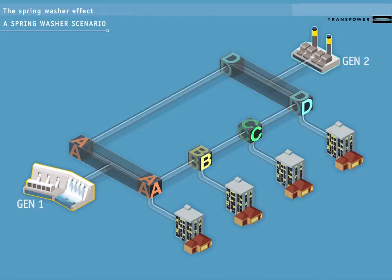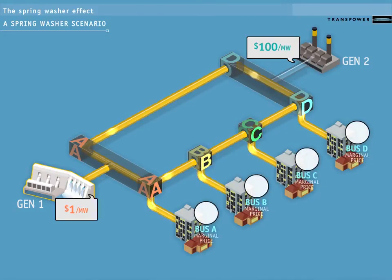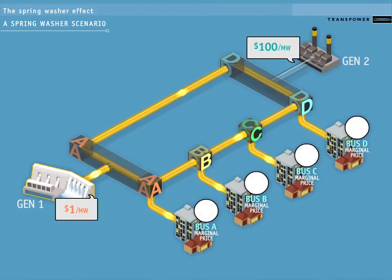Generator 1 is currently offering power at $1 per megawatt. Generator 2 is offering power at $100 per megawatt. Generator 1 is able to supply all the loads at buses A, B, C and D for the cheapest price. Generator 1 is also the marginal generator for the system, so the marginal price at the buses is $1.